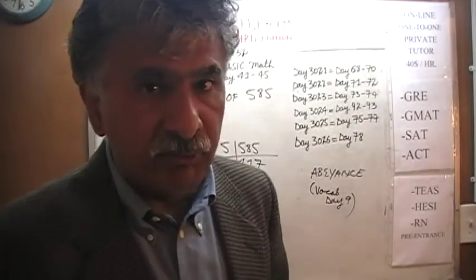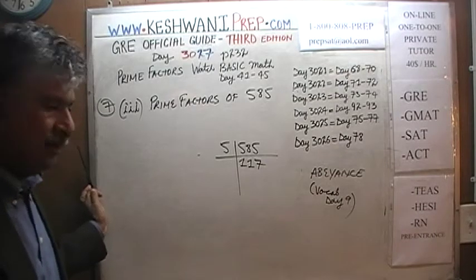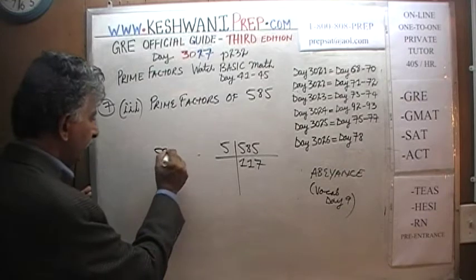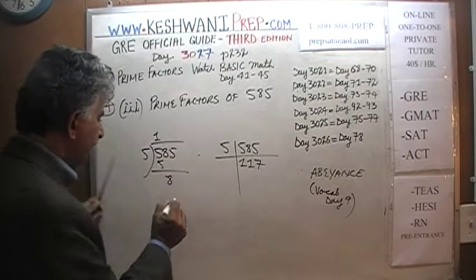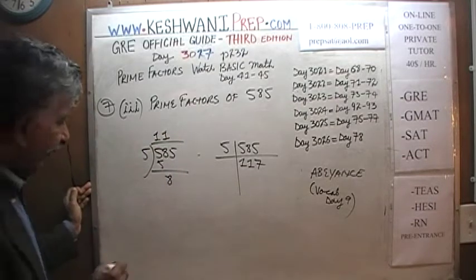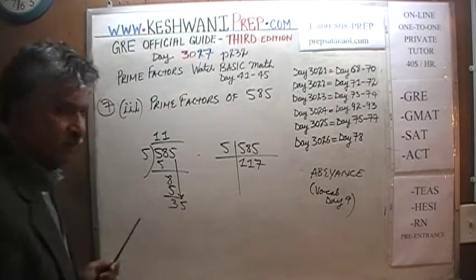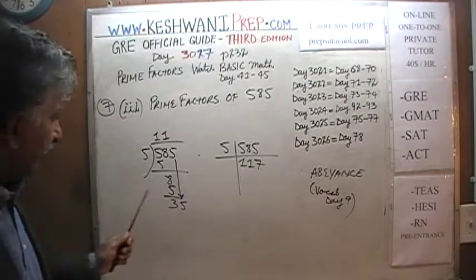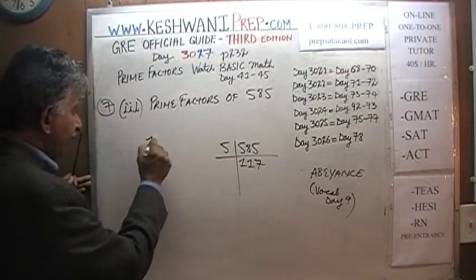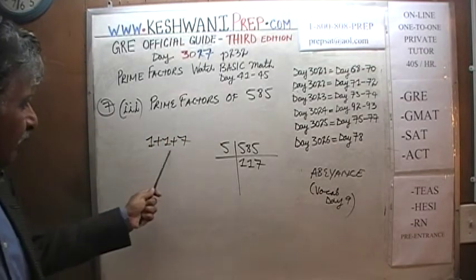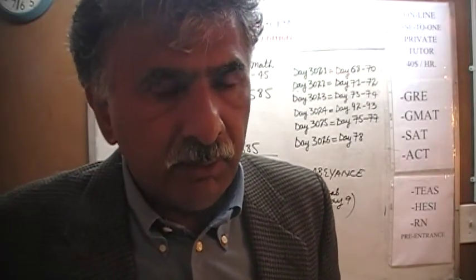If you're incapable of doing the divisions orally, just do it out on the side — it doesn't take long. Now, 117: we add up the digits — 1 plus 1 plus 7 equals 9. We know that if the sum of the digits is divisible by 3, the number itself is divisible by 3. So let's divide 117 by 3.